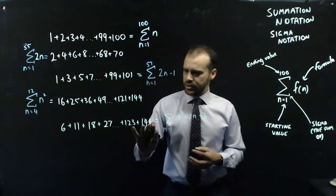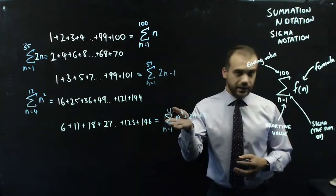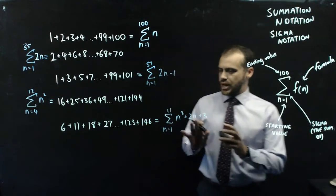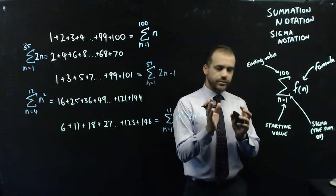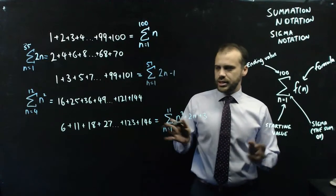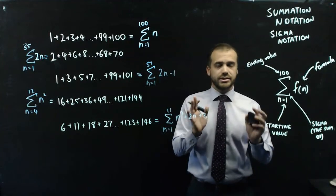1 squared is 1, plus 2 is 3, plus 3 is 6. Yep. And the last value here must be 11. So that is summation notation. Have a think about it. Have a play with some examples. Try some questions. That's summation notation.